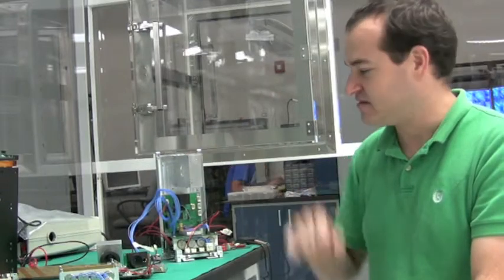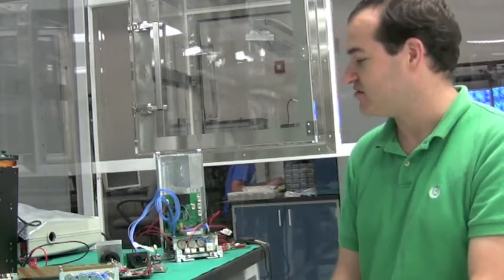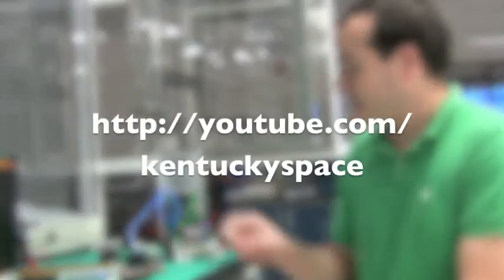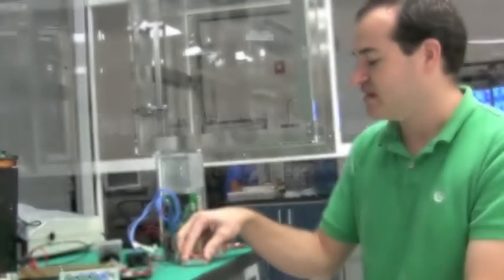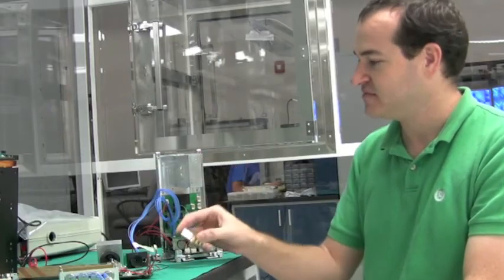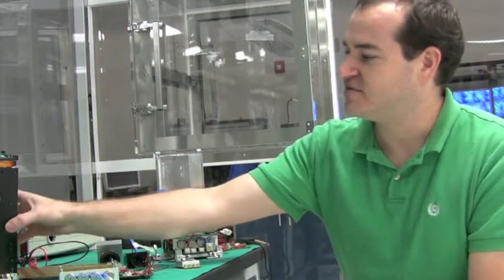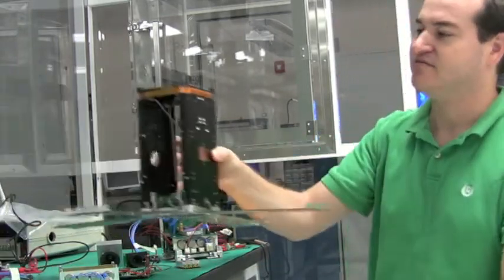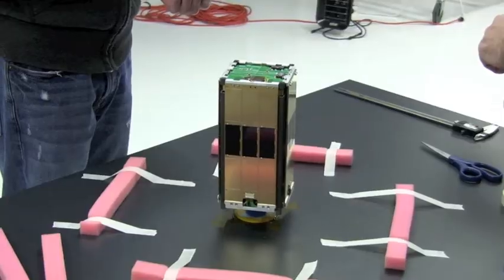The payload sits up here, which you can listen to Ben Malfres describing in another segment. On the back of the payload sits a portion of the radio system back here. And then on the very top of the satellite, here's one of our other engineering models, is the antenna system itself.